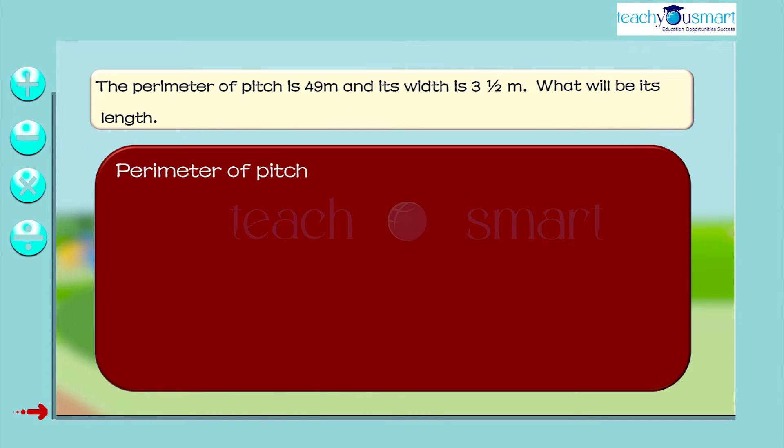Given that the perimeter of the pitch is 49 meters and its width is 3 1 by 2 meters equals 3 multiplied by 2 plus 1 divided by 2 equals 7 by 2 meters. We have to find the length of the pitch.